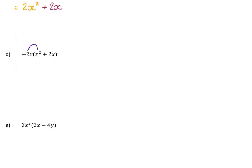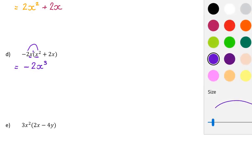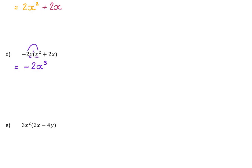Negative 2x times x squared — signs, numbers, variables. Negative times positive is negative. Numbers: there's just a 2. And now I have x times x squared. When I multiply powers of the same base, I add exponents: 1 plus 2 is 3, so I have x cubed. Then a negative times a positive is a negative. 2 times 2 is 4. And x times x is x squared. Signs, numbers, variables every time. Notice those aren't like terms because x cubed isn't like x squared.